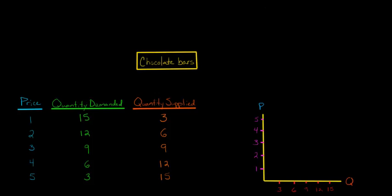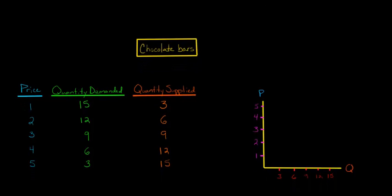Now we can think about for different prices, what is the quantity demanded by consumers, how much do they want to buy, and how much are producers willing to supply. And then we can plot out those data points in a graph, and that will tell us where our equilibrium is.